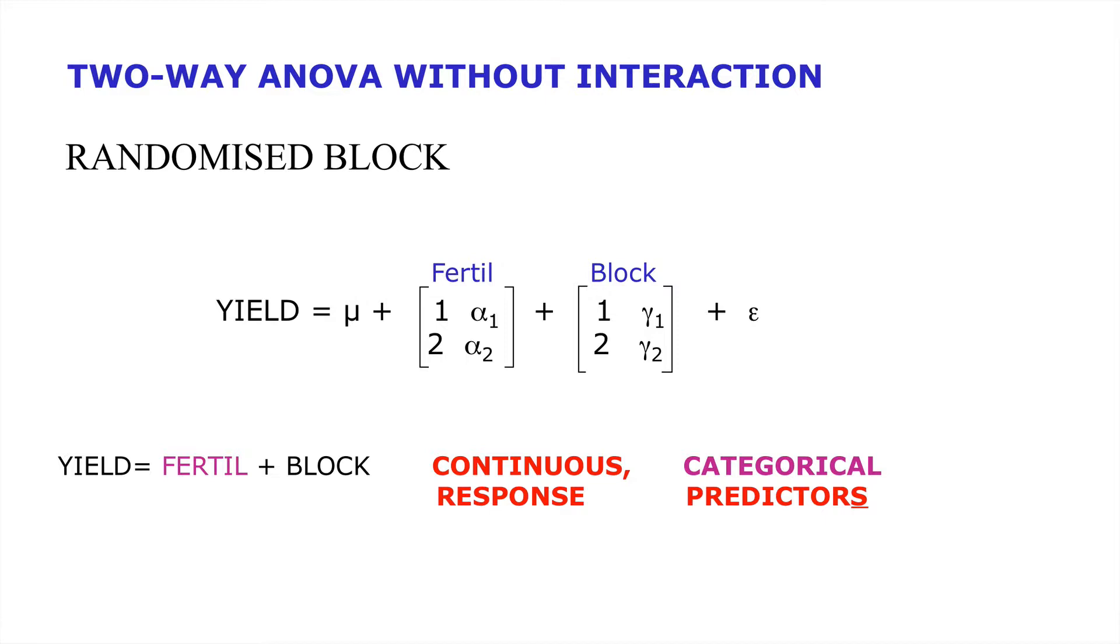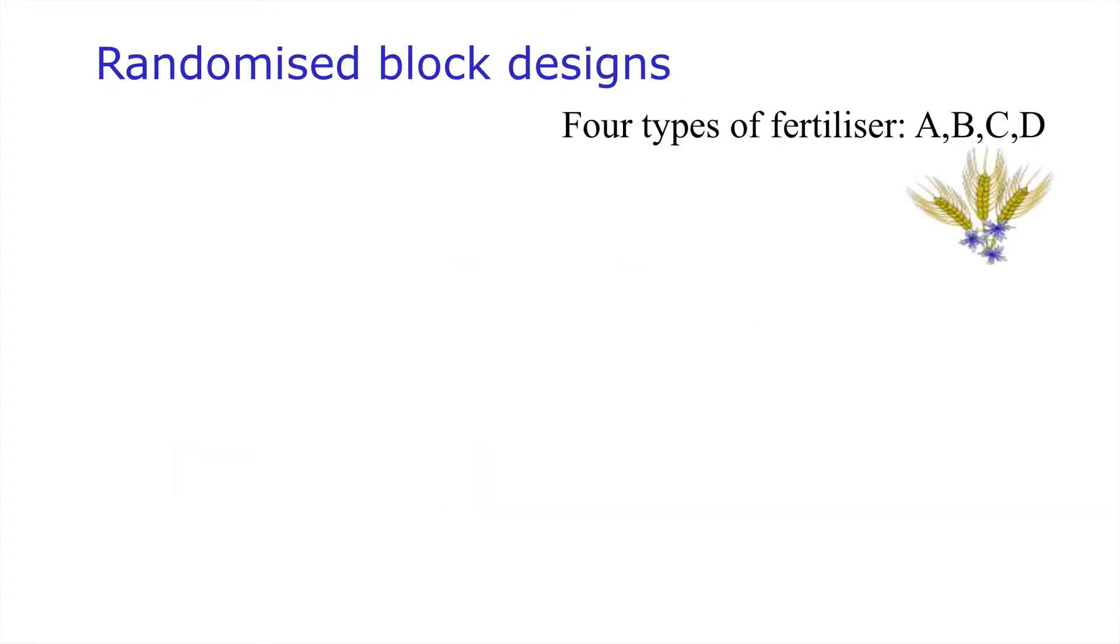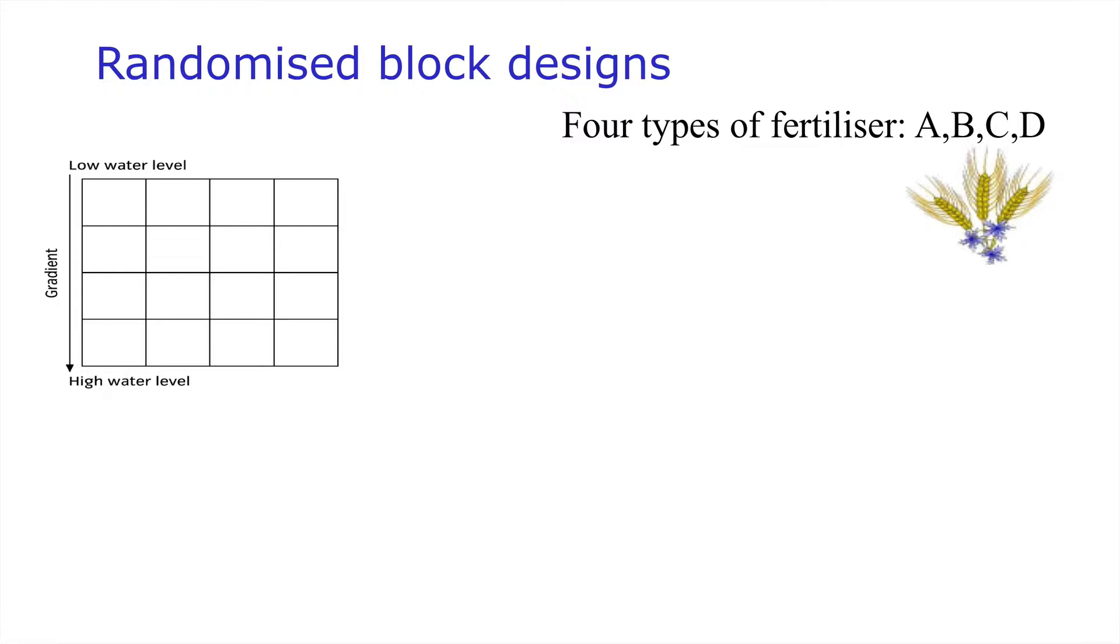Why is blocking such a useful design component? So imagine we've got four types of fertiliser: A, B, C and D. And imagine also we're in the real world where we've got to look at the growth of plants with these types of fertiliser but we're faced with a potential gradient of water such that we have low water level going to high water level here. Well one particular design would be, well this looks neat having all our A's here, all the types of fertiliser B here, C and D.